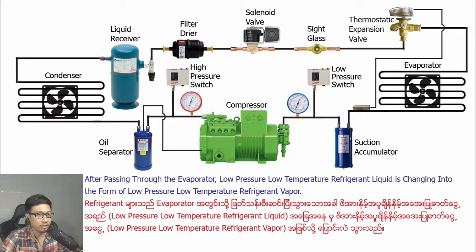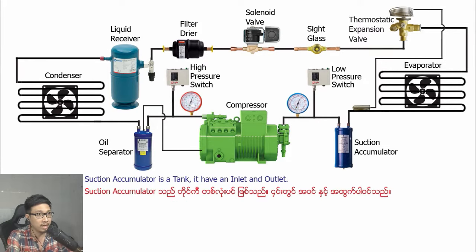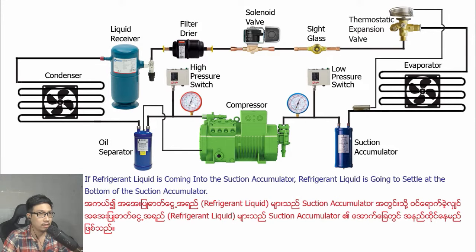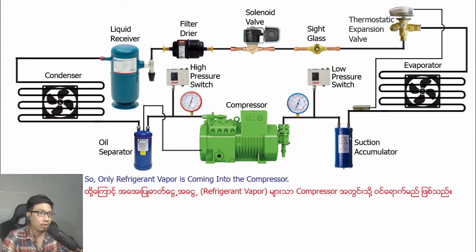After passing through the evaporator, low pressure, low temperature refrigerant liquid changes into the form of low pressure, low temperature refrigerant vapor. The suction accumulator has an inlet and outlet. The compressor is designed to suction refrigerant vapor only, not refrigerant liquid. If refrigerant liquid enters the suction accumulator, it settles at the bottom of the suction accumulator, so only refrigerant vapor enters the compressor.